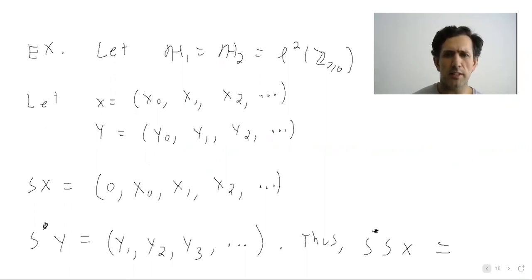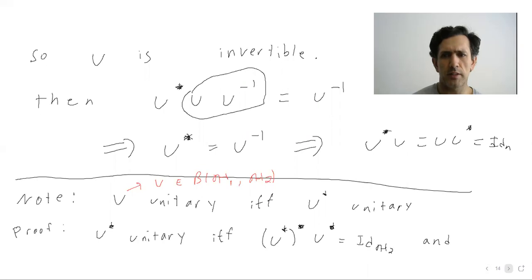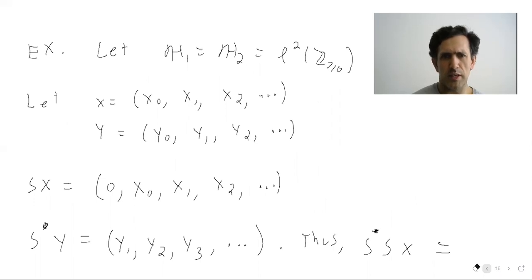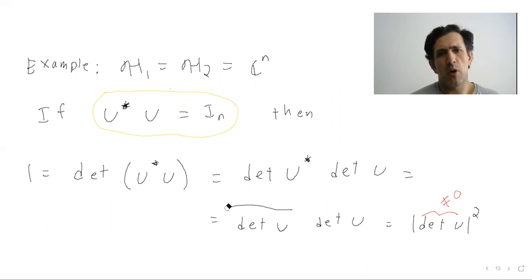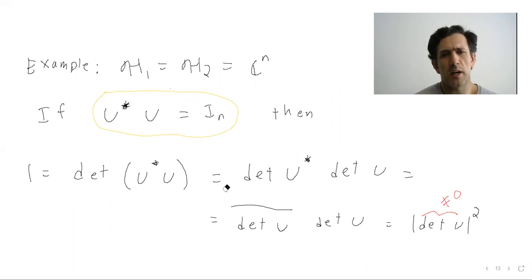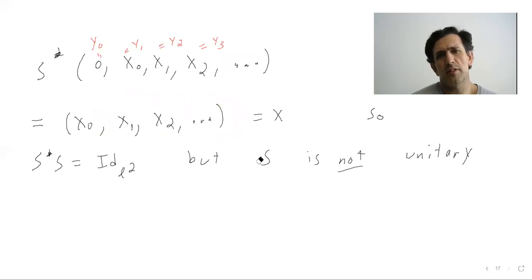This clearly says that the theory of determinants as used in advanced linear algebra really cannot be used for operators on an infinite dimensional Hilbert space. If it did magically work, it would say U is invertible whenever U*U is the identity — but the shift operator clearly shows that's not true. The shift operator is obviously not invertible.